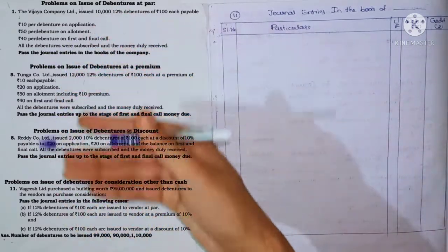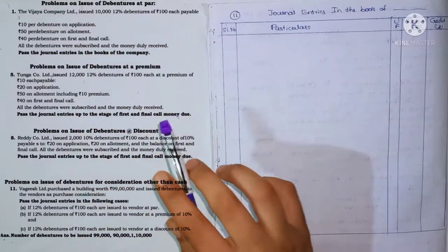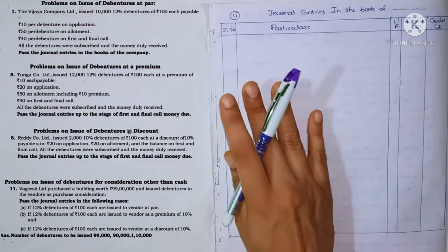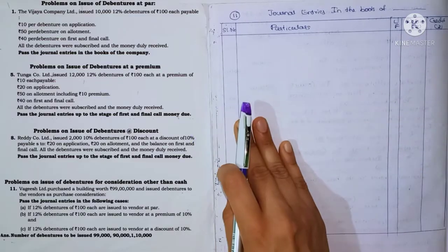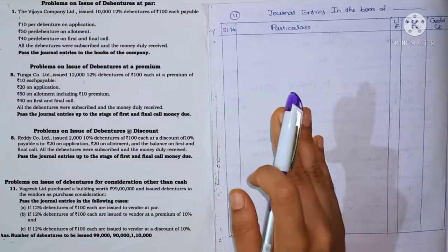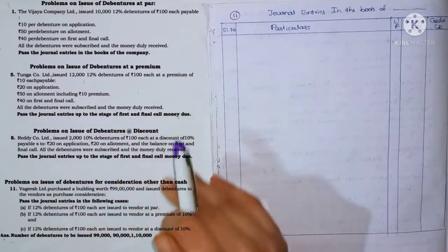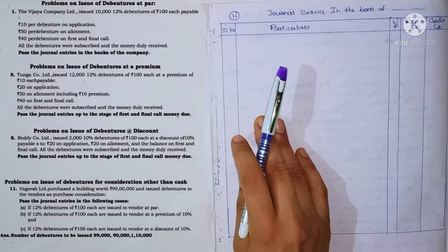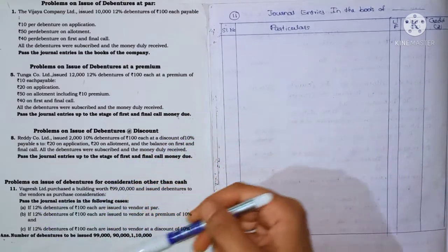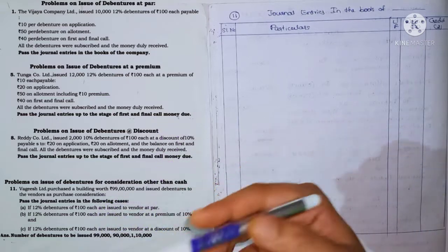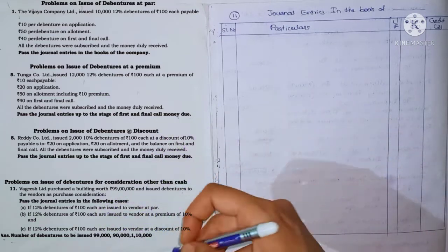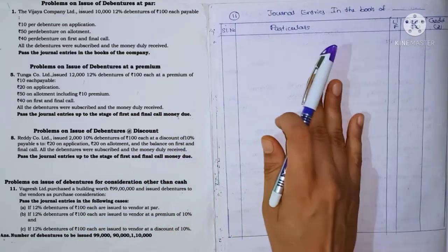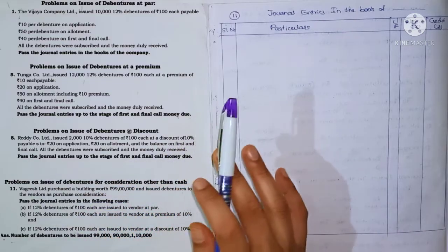This is a very easy problem. I will explain the details. In this session, I will discuss debenture — the cash issue for the debenture and the entries for cash issue. I will also explain debenture issued for consideration other than cash.